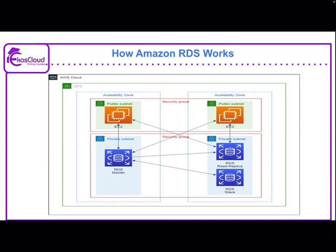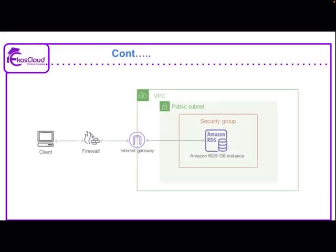This is how Amazon RDS works — how it reaches the public subnet and how data is retrieved. Now I am going to show you a simple flow: the client passes the request via the firewall and the internet gateway available in AWS. Then it reaches through the VPC, then the public subnet, where a security group allows the user or client. With eligible parameters, it will reach the RDS database instance, and then the response comes back to the client.